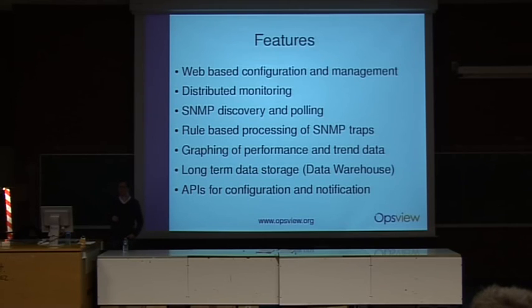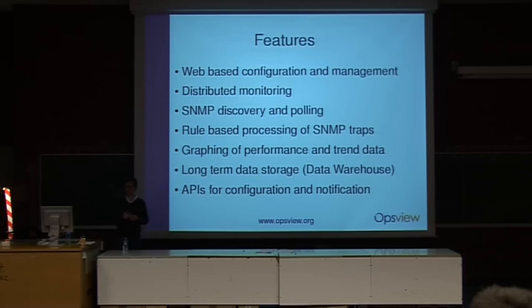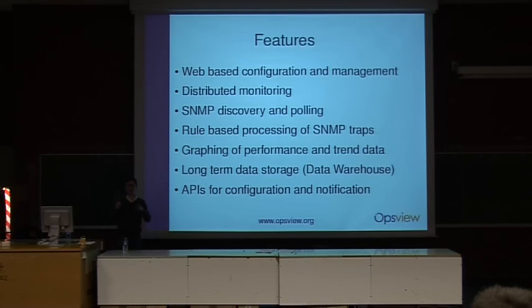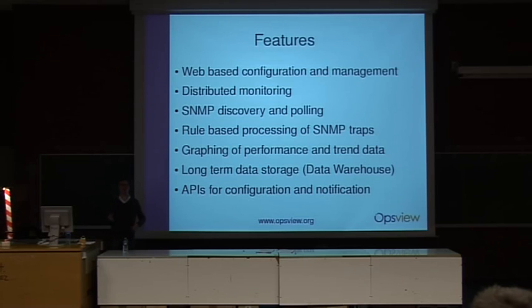As well as the web UI, we also have an API — or several APIs: one for configuration, one for notification, and Nagios's API for generating alerts. The point is that you can automate the task of managing your monitoring system. You can script against the API to generate all the objects via that, which is very useful when you've got build environments or are using virtualization — you can hook it all into the same set of scripts.